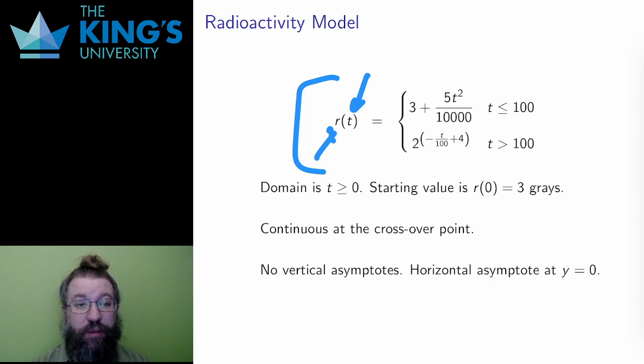This is a piecewise function. The behavior for the first 100 years is different from the behavior after 100 years. The domain here is positive t and there's no reason to put a limit on time. And since this is a piecewise function I want to know if it is continuous at its crossover point. I take the limit from the left and the limit from the right approaching the crossover point at 100. In this case both limits are 8, so this is continuous.